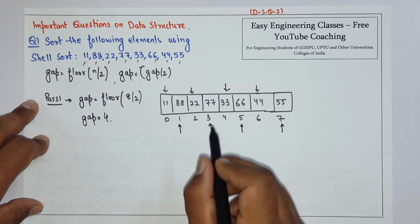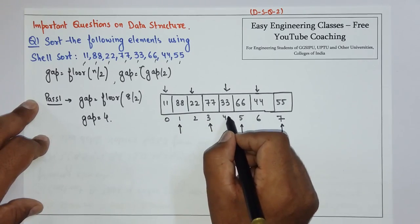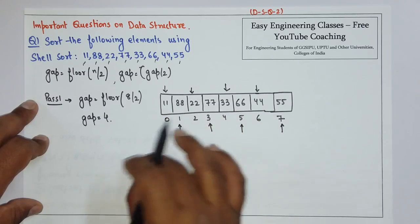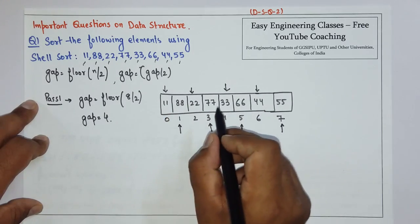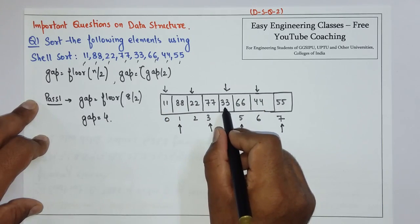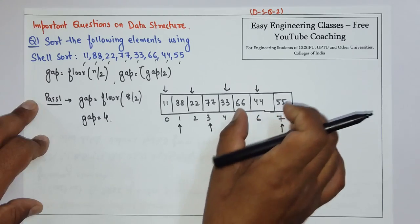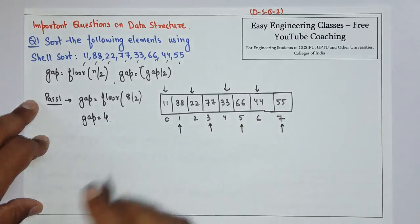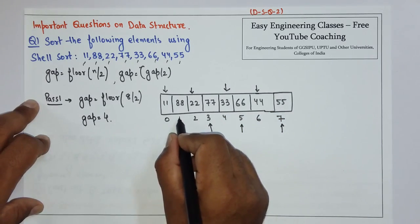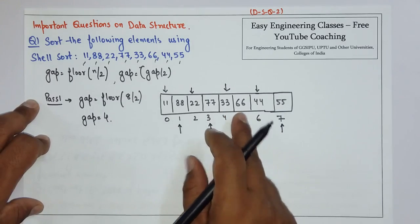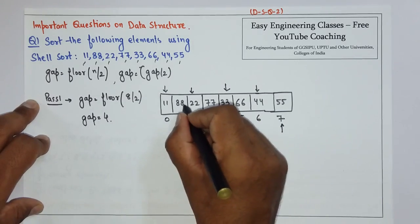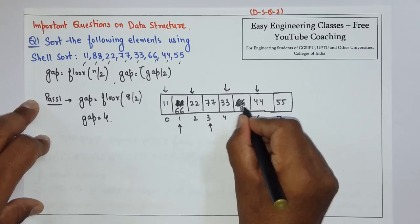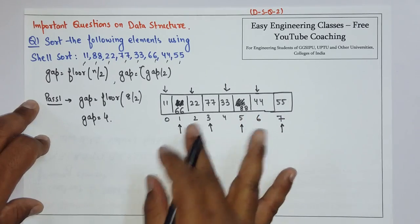Element at 0 is 11 and element at 4 is 33. Since 11 is smaller than 33 we will not swap them. Then element at 4 is 33 and element at 7 is 55 — it is also smaller so we will not swap them. Then element at 1 is 88 and element at 5 is 66, so we have to do the swapping. So swap them and it will become like this.